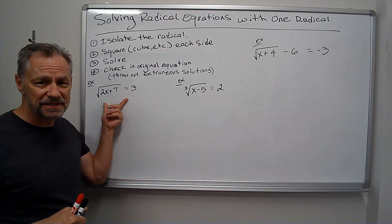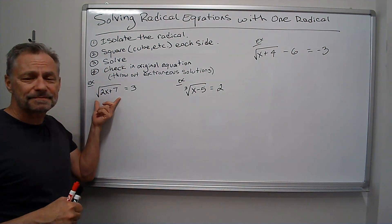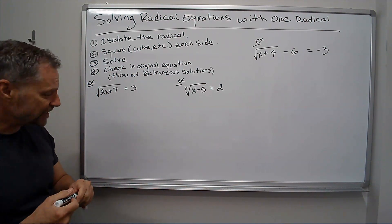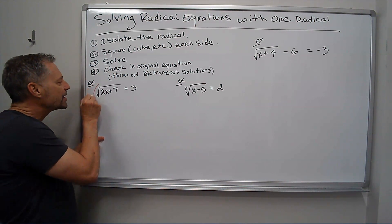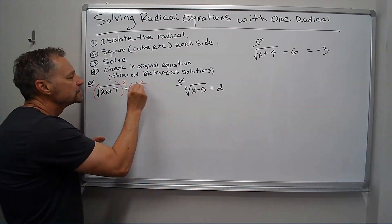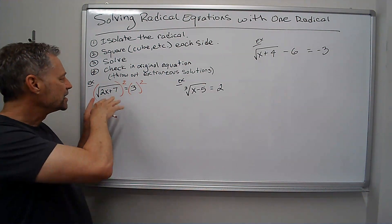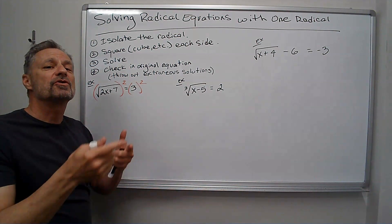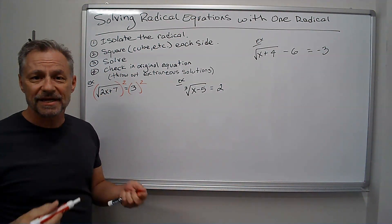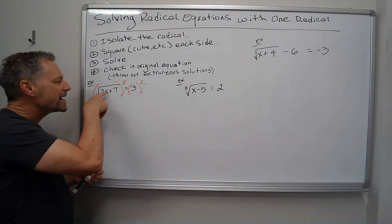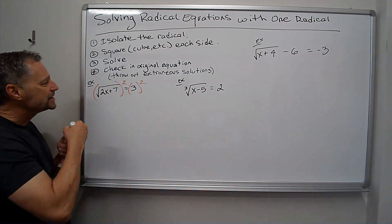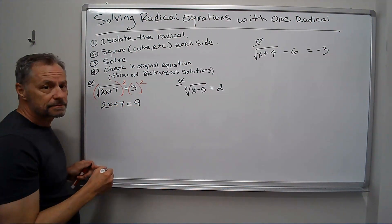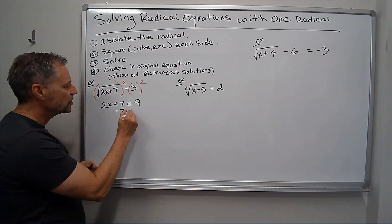I've got the square root of 2x plus 7 equals 3. The square root's already all by itself, the radical's by itself. So I'm just going to go ahead and square both sides. And to save room, I'm just going to square it here. What's in black, I want to leave there so that we know what to plug back in as the original equation to check our solutions. But when I square the square root, those cancel out. I just get 2x plus 7 equals 9. And now there's no radical left. I'm just going to go ahead and solve that.